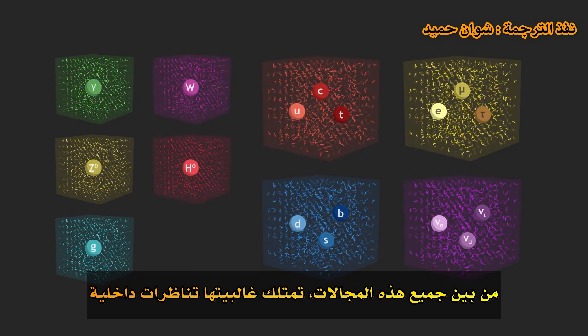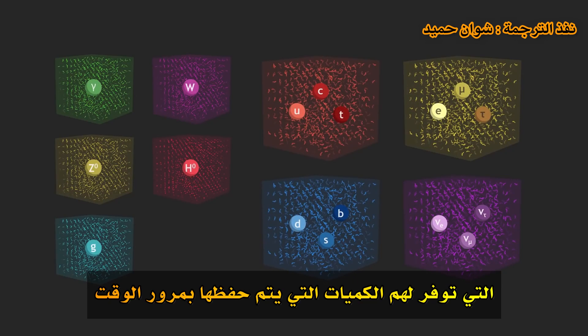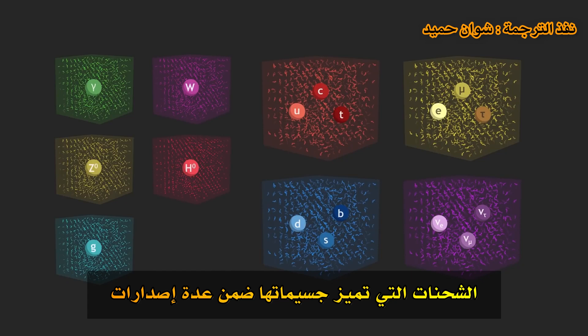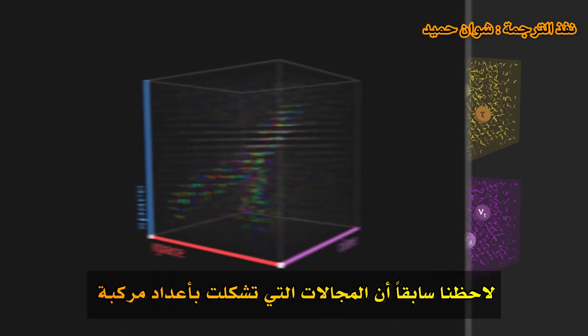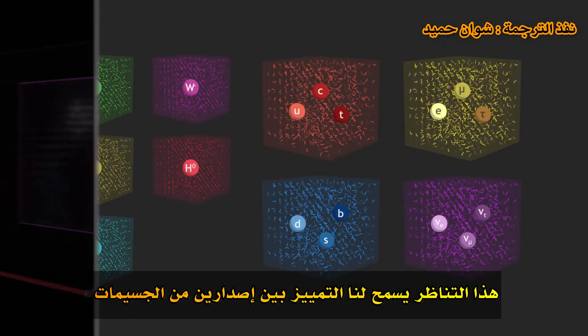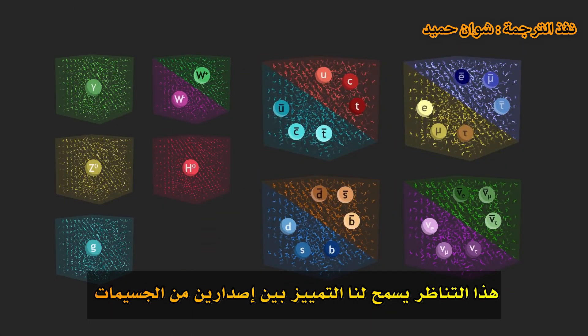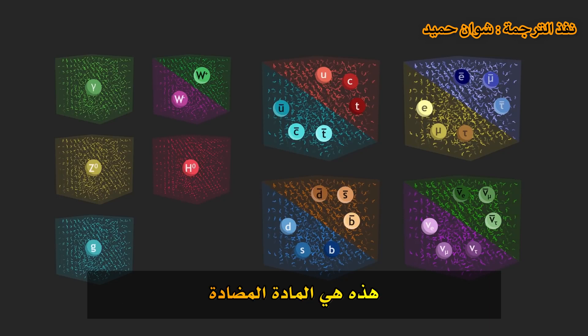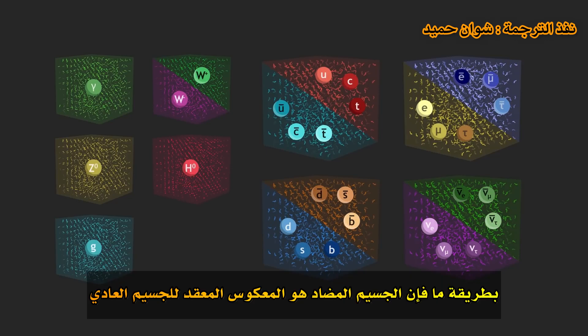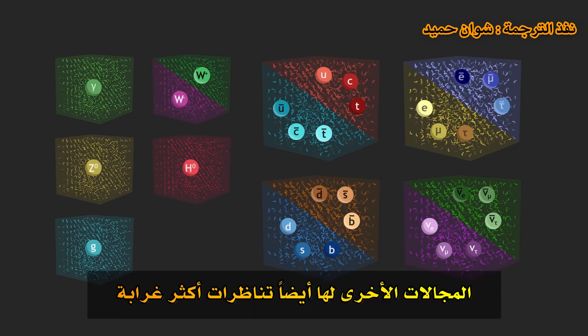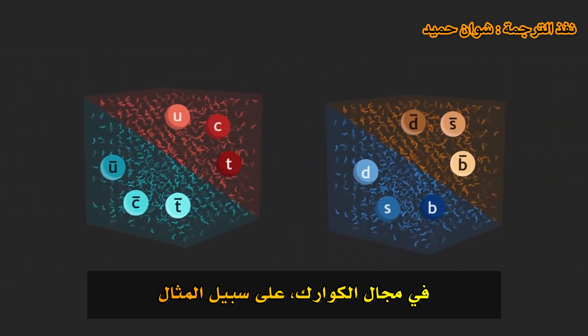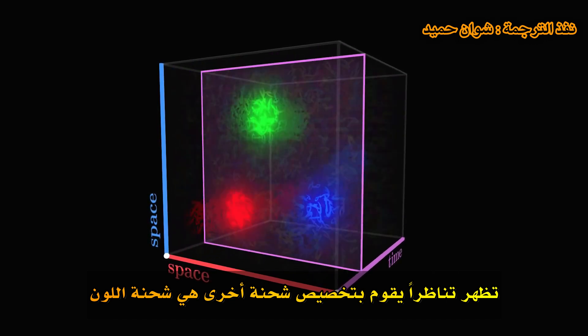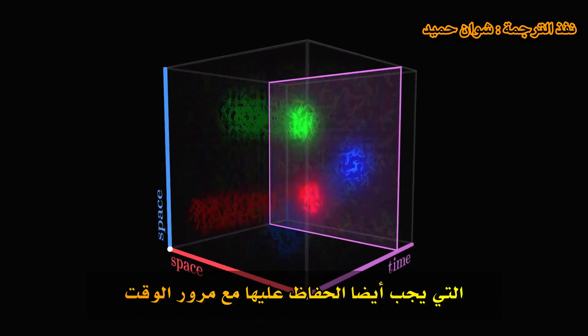Among all these fields, most have internal symmetries which provide them with quantities that are conserved over time — charges — which distinguish their particles between several versions. We saw previously that fields formed with complex numbers have a symmetry which gives them their electric charge. This symmetry allows us to distinguish two versions of the particles: one with positive charge, the other with negative charge. This is antimatter. In a way, the antiparticle is the complex conjugate of the ordinary particle. Other fields also have more exotic symmetries. The quark fields, for example, exhibit a symmetry which assigns them another charge — the colour charge — which must also be conserved over time. And that allows us to separate quarks into three versions: red, green, and blue.